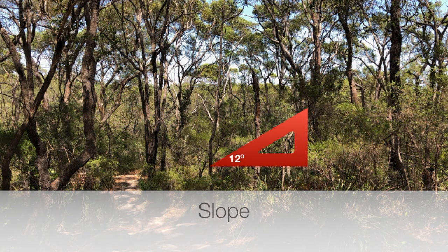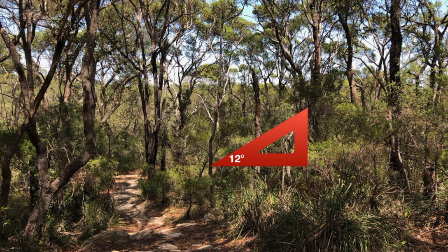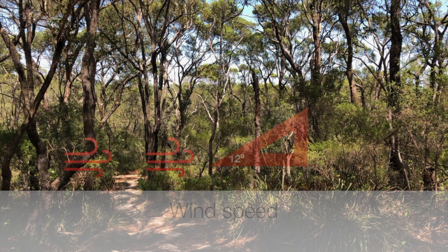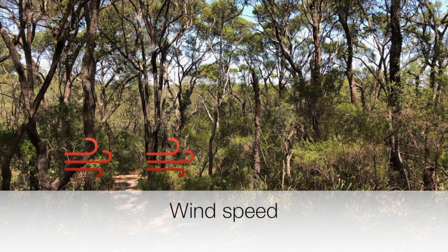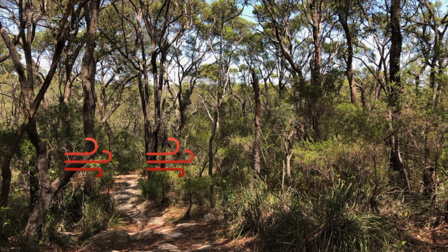Slope is the angle of the incline at the site. Generally, the steeper the slope, the more potential for erosion to occur. Wind speed is the rate at which air is moving in a particular area and can affect the growth, reproduction, and distribution of plants. It is important to remember that the wind speed at ground level is often different at the canopy level.